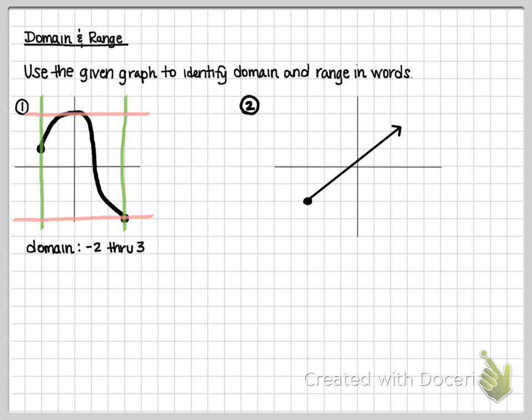So here, I would say that my range, again, going low to high, my range is going to start at negative 3. Again, I'm looking at y values. And it is through, it looks like the height there is positive 3. So there's my domain and range for the first one.